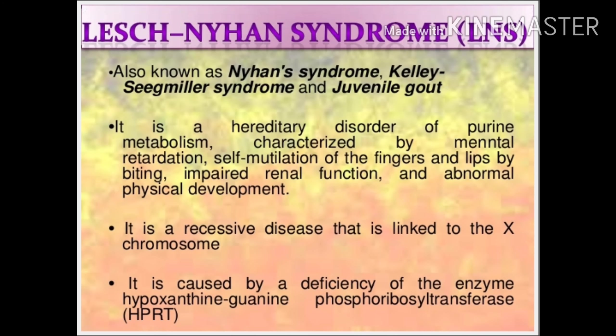Lesch-Nyhan syndrome is also known as Nyhan syndrome, Kelly-Seegmiller syndrome, and also by the name juvenile gout. It is a hereditary disorder of purine metabolism, characterized by mental retardation and self-mutilation — self-harming of the fingers and lips by biting — as well as impaired renal function and abnormal physical development. It is an X-linked recessive disease.